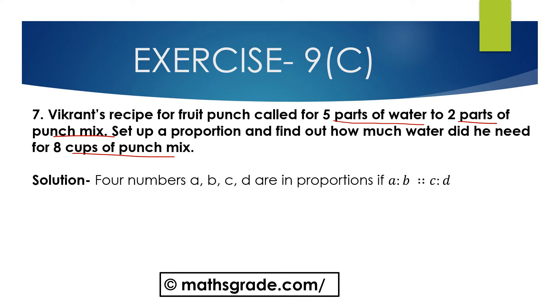Four numbers A, B, C, D are in proportion, then we can write A is to B is proportional to C is to D. That is A times D is equal to B times C — the product of extremes is equal to product of means.